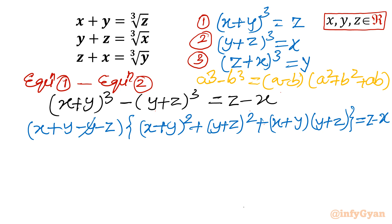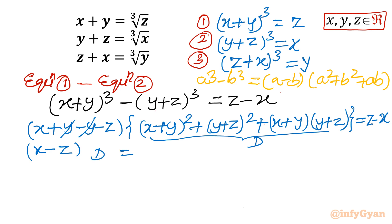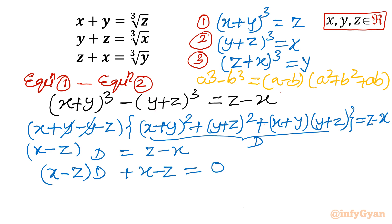I will cancel plus y minus y in the first bracket, so what is left is x minus z. Let the second bracket be called d. So we have (x minus z) times d equal to z minus x. Taking z minus x to the left-hand side, I write (x minus z) times d minus (z minus x), or better: bring everything to the LHS so it equals zero. x minus z is common.